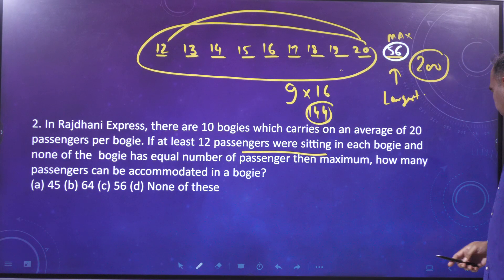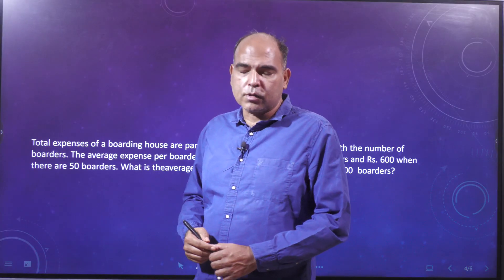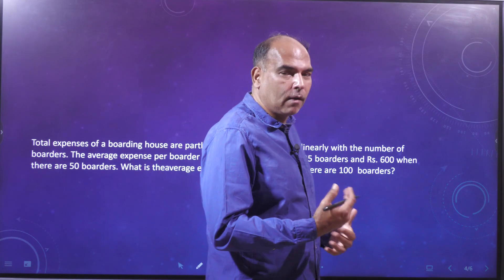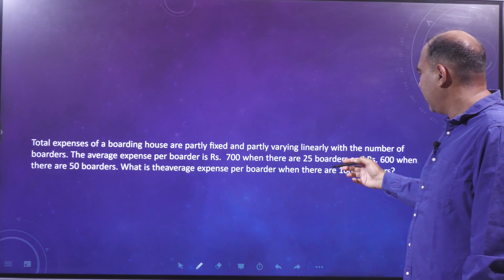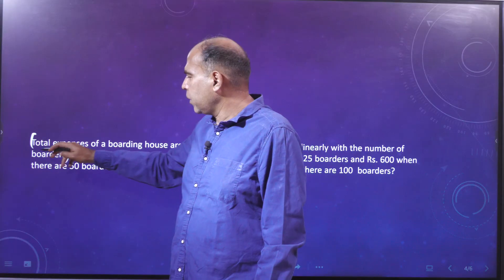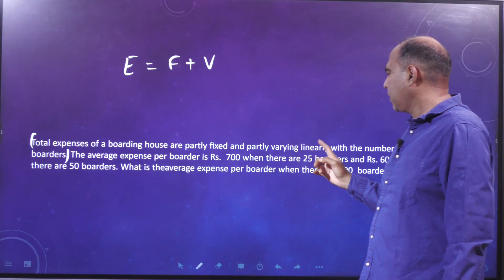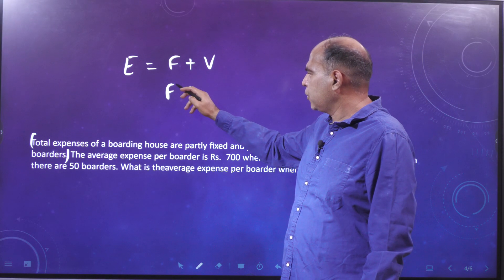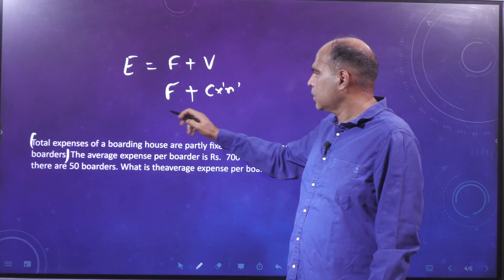The third question is a very standard one that appears in almost every exam. It is about fixed cost and variable costs. The total expenses of a boarding house are partly fixed and partly varying linearly with the number of boarders. So total expenses equal fixed expenses plus some constant c times n, where n is the number of boarders.